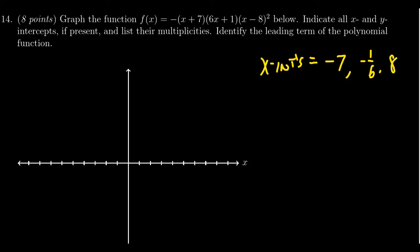It does also mention that we should list the multiplicities. The (x+7) shows up once, so its multiplicity is 1. The (6x+1) shows up once, so its multiplicity is 1. The (x-8) shows up twice, so its multiplicity is 2. Be aware how this affects the graph. Odd multiplicities will cross the x-axis, but even multiplicities will touch it.